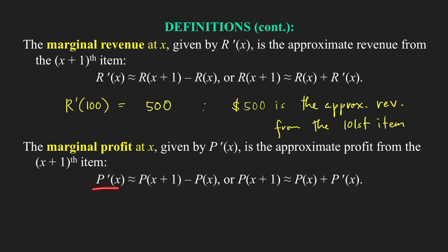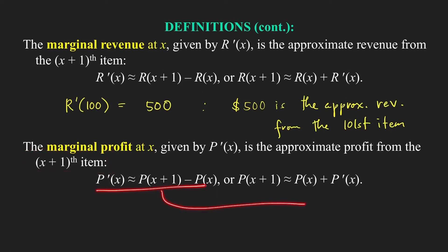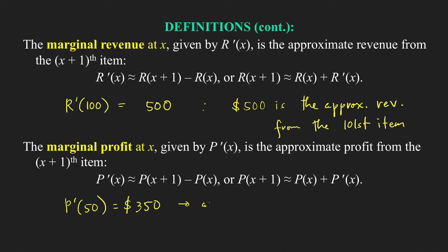Similarly, the marginal profit p'(x) is the derivative of the profit function and is the approximate profit from the (x+1)th item. We have p'(x) ≈ p(x+1) - p(x), which is the exact profit from the (x+1)th item. For example, if p'(50) = 350 dollars, then 350 dollars is the approximate profit from the production and sale of the 51st item.